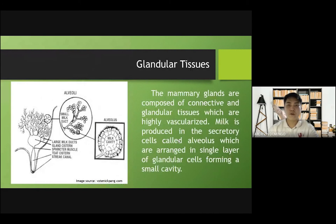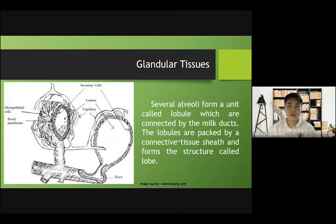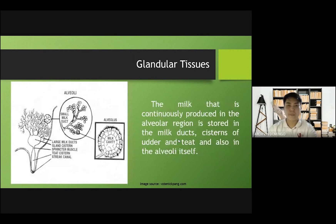The mammary glands are composed of connective tissues and glandular tissues, which are highly vascularized. Milk is produced in the secretory cells called alveolus, which are arranged in a single layer of glandular cells forming a small cavity. Several alveoli form a unit called lobule, which are connected by the milk ducts. The lobules are packed by a connective tissue sheet and form a structure called lobe. The milk that is continuously produced in the alveolar region is stored in the milk ducts, cisterns of the udder, and teats, and also in the alveoli itself.